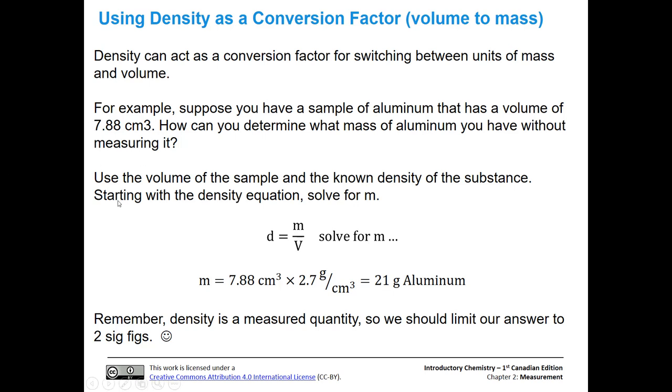Start with the density equation. We have the volume, we have the density, we can solve for mass. When we do that, we find that volume multiplied by density gives us the mass. In this case, we have 7.88 cm³ multiplied by 2.7 g/cm³. Notice how the centimeter cubed cancels out, leaving us with grams. So we have 21 grams of aluminum.